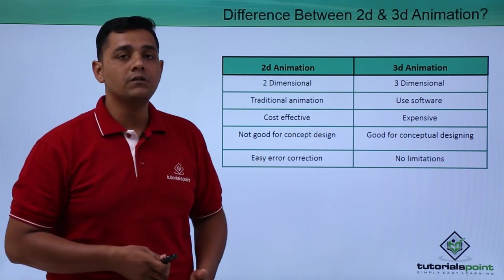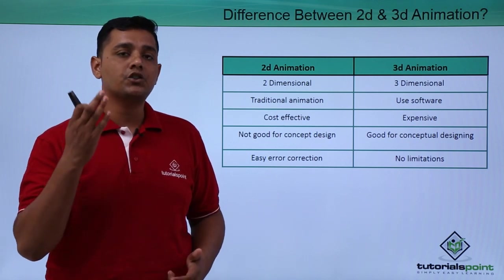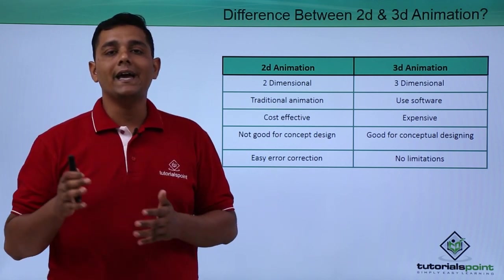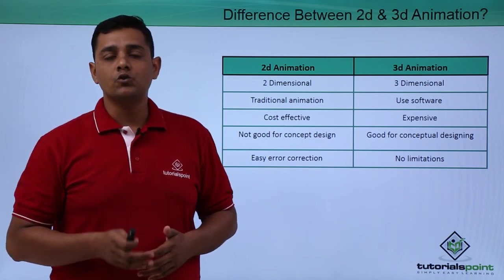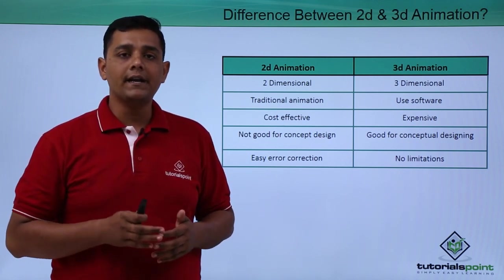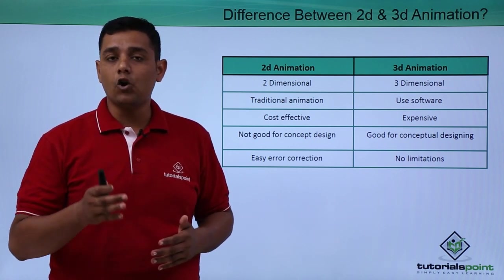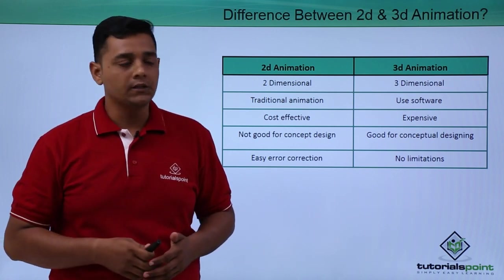While in 3D animation, there are three dimensions: x, y, and z. So an animator can get width, height, and also depth.